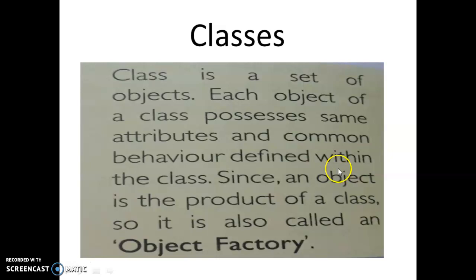Next I want to explain Classes. Class is a set of objects. That means if you have 10 or 20 pens, then that is a class. This pen class has different types of objects and each object of a class has the same attribute and common value defined within the class. So all pens have the same characteristics and are used for writing purpose. Since an object is the product of a class, so it is also called an object factory.